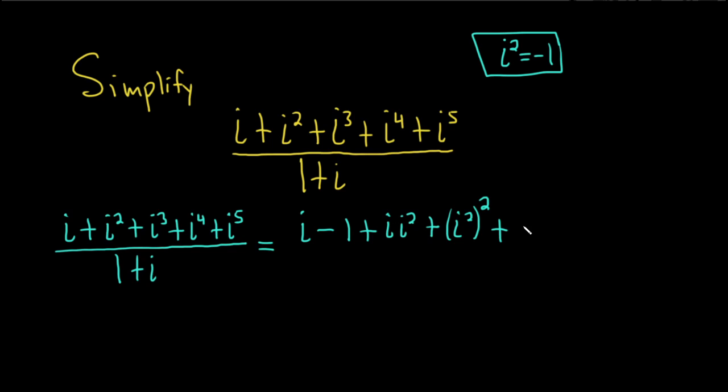Plus, and then i to the fifth, we can think of that as i to the fourth times i, or even better, i squared squared times i, right? Because this one is i to the fourth. And then when you multiply these, you add the exponents, and that gives you 5, which is here. And it's all over 1 plus i.